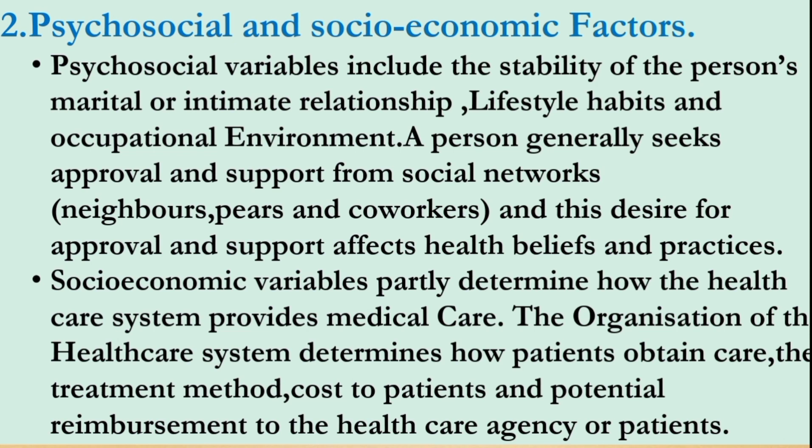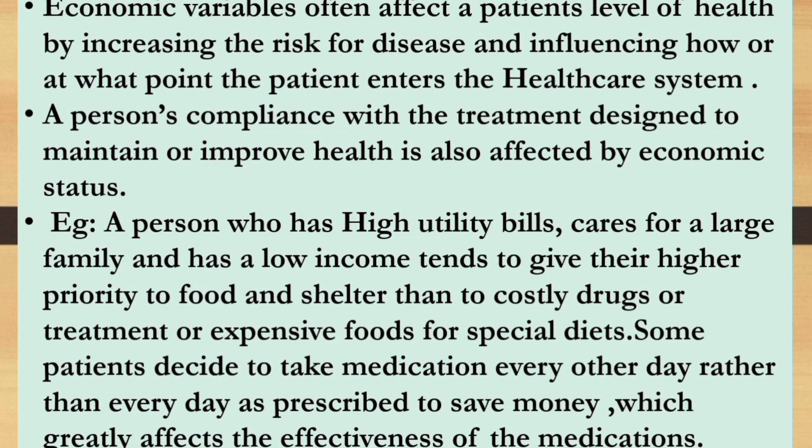The social and economic variables partly determine how the health care system provides medical care. The organization of the health care system determines how patients obtain care, the treatment method, cost to patients, and potential reimbursement to the health care agency or patients. Economic variables often affect patients' level of health by increasing the risk for disease and influencing how or at what point the patient enters the health care system.